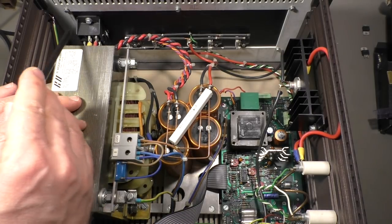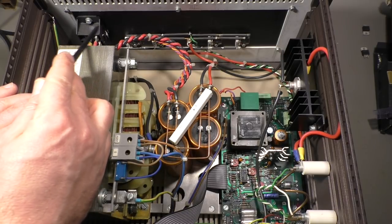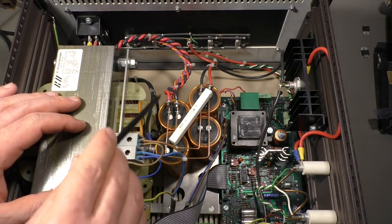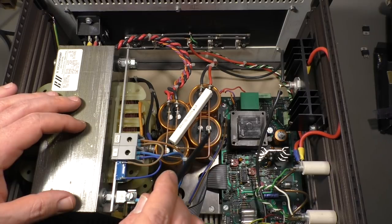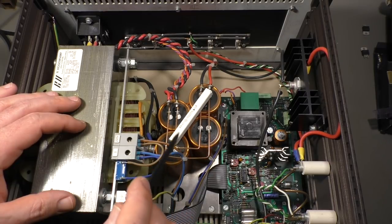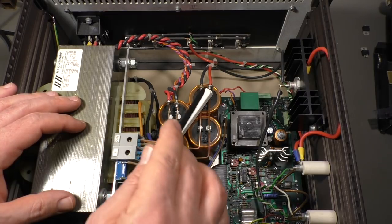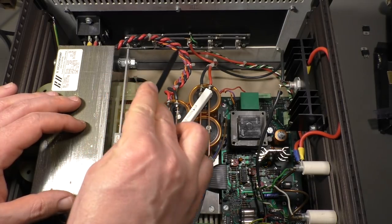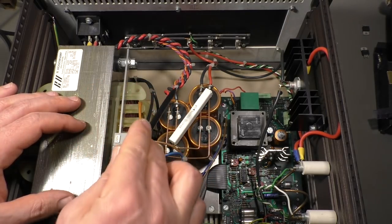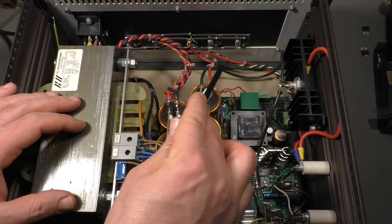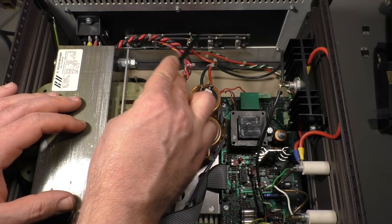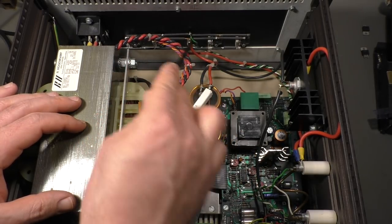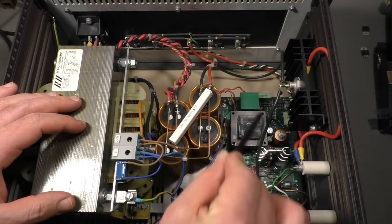Then we have some sort of rectifier here. We have caps nicely connected with thick copper wire here. There is input from the rectifier and output to the regulating transistors and also to the board here.